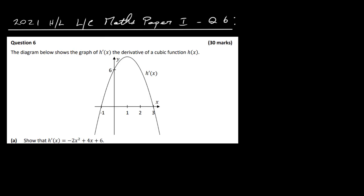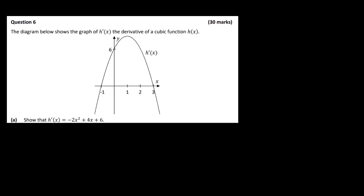In this video I'm going to have a look at the 2021 higher level Leaving Cert maths paper 1, question 6. We have a diagram that shows the graph of h prime x, the derivative of the cubic function h of x. Show that h prime x is equal to minus 2x squared plus 4x plus 6.